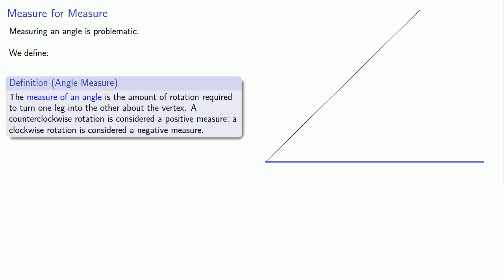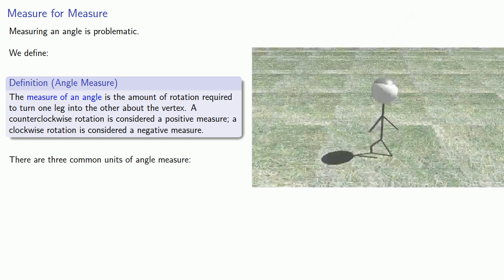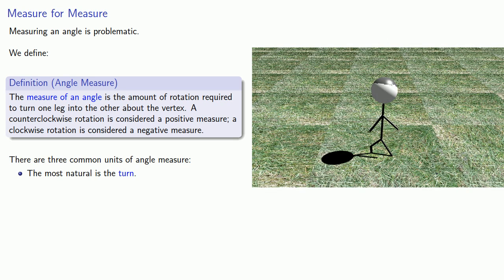Now, in order to measure the amount of rotation, there are three common units of angle measure. If you tell someone to turn halfway around, or to turn all the way around, or to turn around five times, they'll know what you mean. While to turn is the most natural unit of measure, the most useful is something called the radian. We'll talk about radians in more detail later.